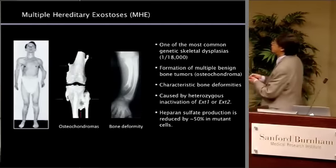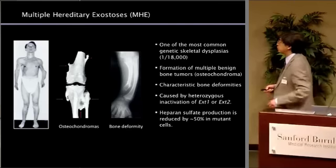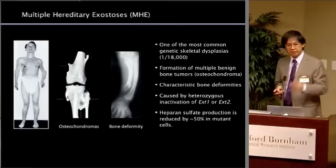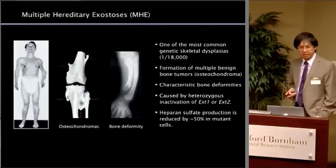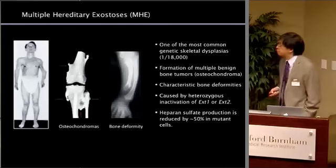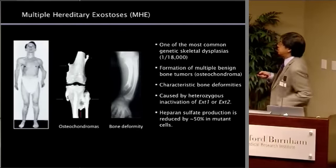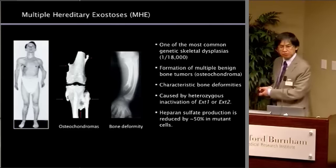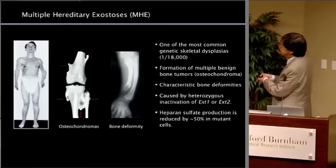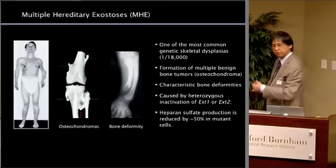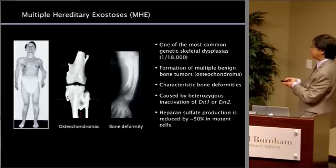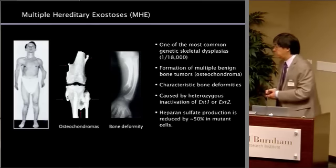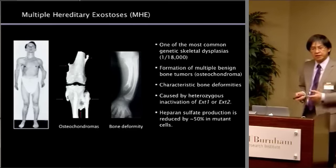MHE — multiple hereditary exostoses — is actually one of the most common genetic skeletal dysplasias. Depending on the paper, prevalence is about one in 18,000, so it is a relatively common rare disease, with nearly 10,000 patients in the country. The main feature is the formation of multiple benign bone tumors called osteochondromas. Patients also have characteristic bone deformity such as bowing of the forearm. This disease is caused by heterozygous inactivation of either EXT1 or EXT2 gene, and heparan sulfate production is reduced by about 50% due to haploinsufficiency.